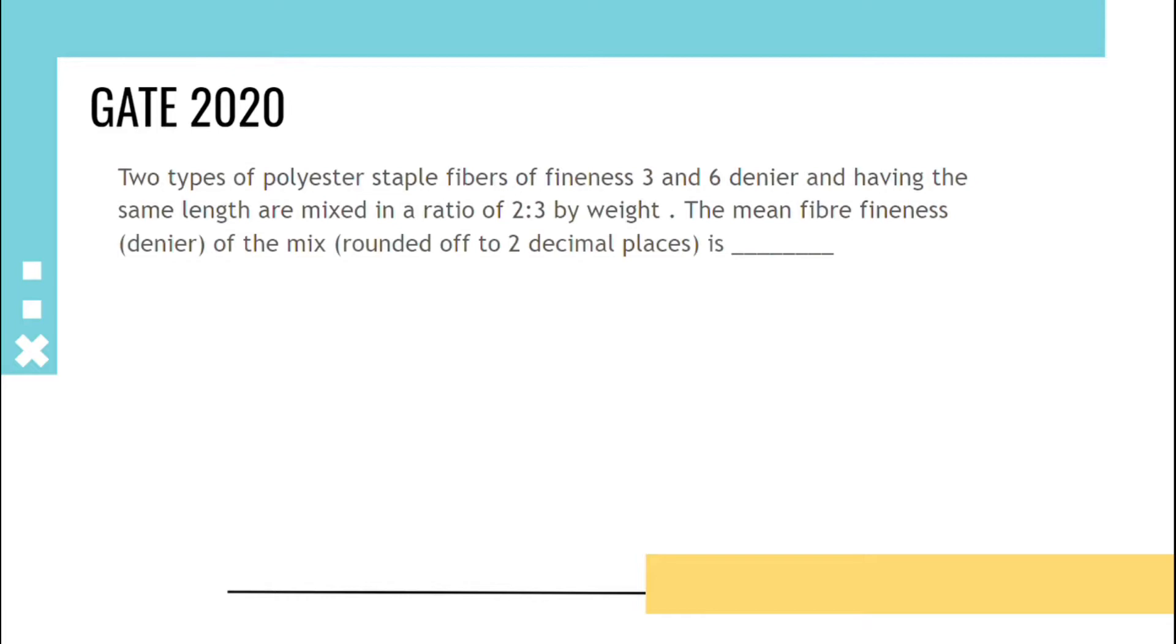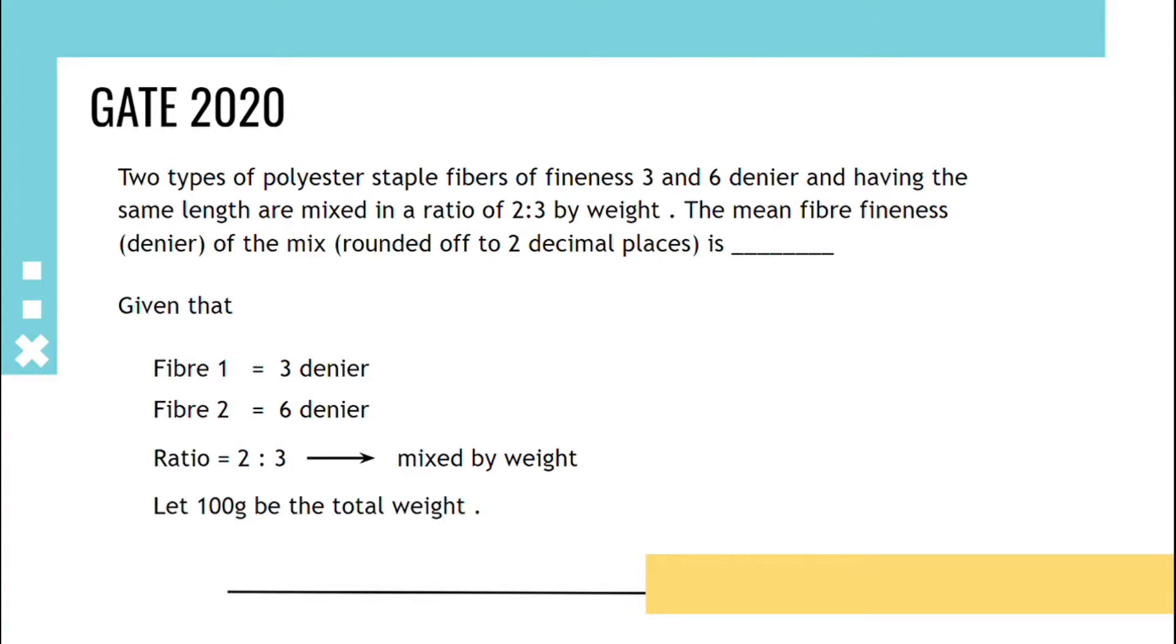Two types of polyester staple fibers of fineness 3 and 6 denier having the same length are mixed in ratio of 2 is to 3 by weight. The mean fiber fineness in denier is asked. So given that fiber 1 is 3 denier, fiber 2 is 6 denier, ratio is 2 is to 3, mixed by weight. Here no weight is given, so let us assume 100 grams be the total weight.